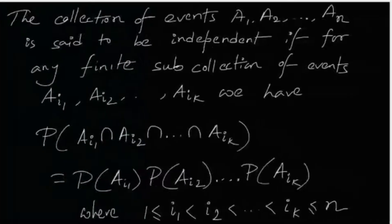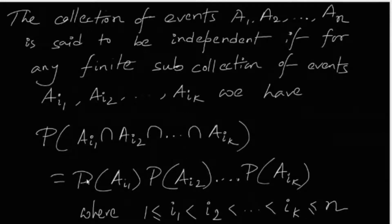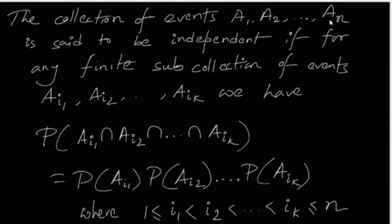How are we going to approach this problem? It's not that difficult. The events are independent — here independent actually means completely independent. A collection of events A1, A2 up to AN is said to be independent if for any finite sub-collection AI1, AI2 up to AIK, the probability of their intersection is equal to the product of the individual probabilities. You take any k distinct events from the collection and that product rule must hold.